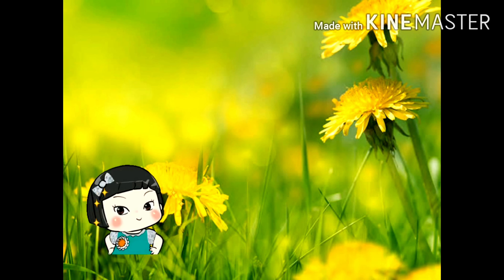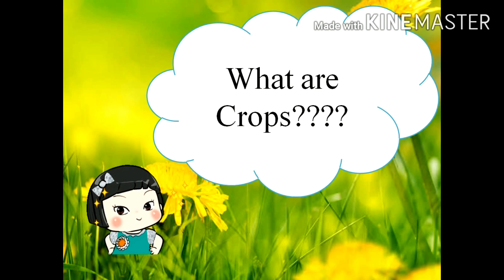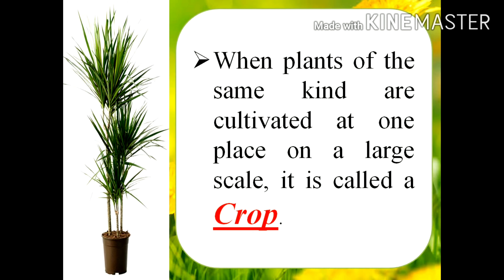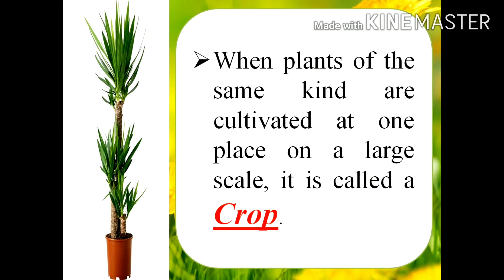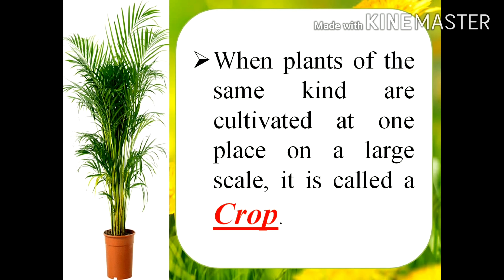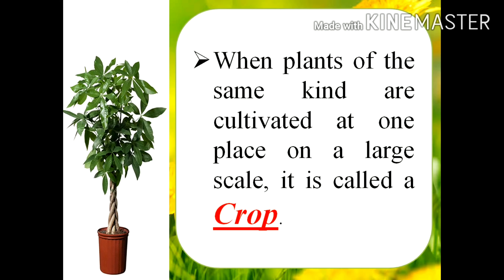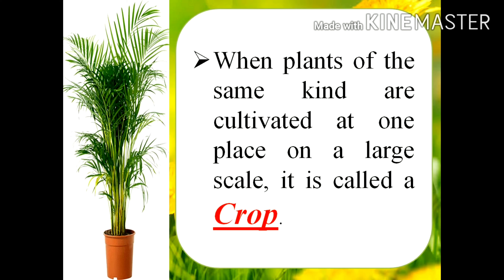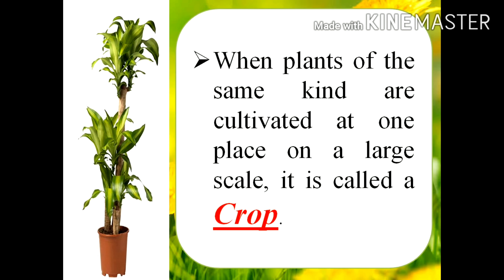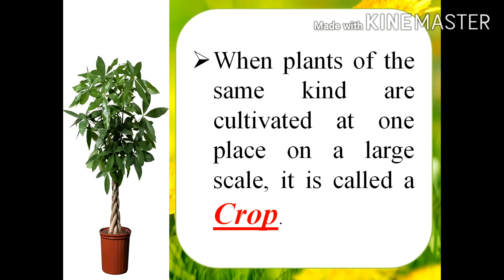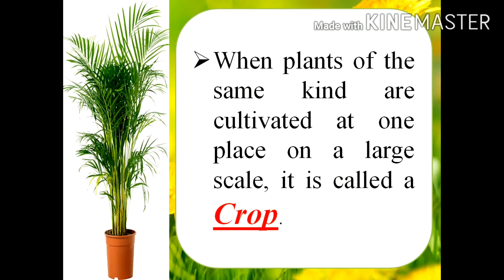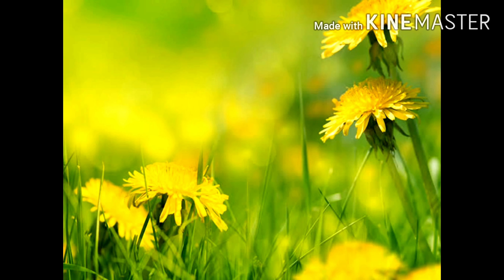Now let's move to the second point: what are crops? When plants of the same kind are cultivated at one place on a large scale, it is called a crop. For example, if in a single farm you are growing a single plant such as groundnut, it is called the crop of groundnut.